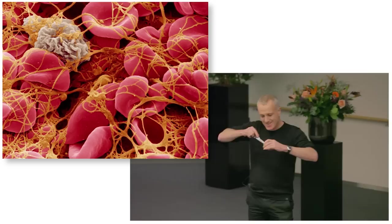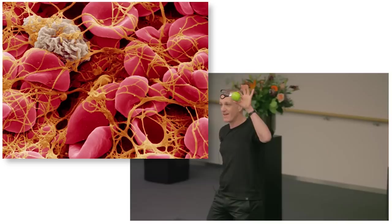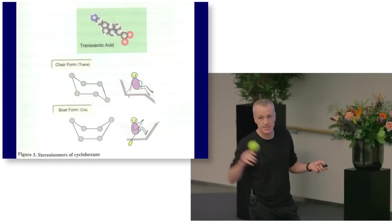Utako Okamoto wanted to find a drug that inhibited plasmin. And she found one — it's called tranexamic acid. She found an effective inhibitor of plasmin. Tremendous effort and a very nice discovery.